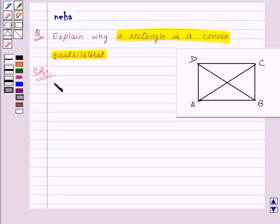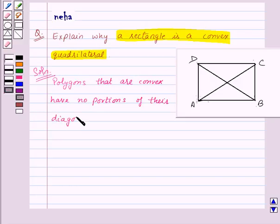Polygons that are convex have no portions of their diagonals in their exterior.